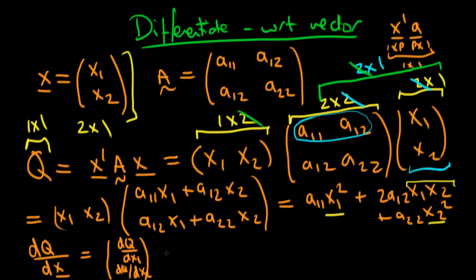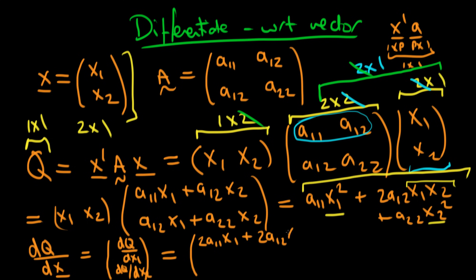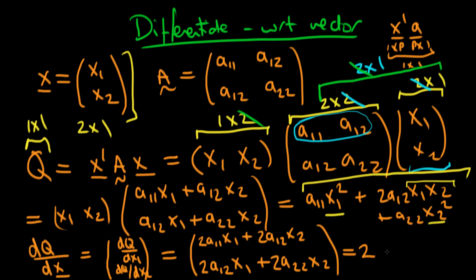We can find these two quantities by taking our explicit form derived earlier and differentiating with respect to x1 and x2. The top component is 2·A11·x1 + 2·A12·x2 — the x2 squared term disappears because x2 is treated as a constant when differentiating with respect to x1. The bottom component is analogously 2·A12·x1 + 2·A22·x2. In fact, we can write this in a much simpler form.